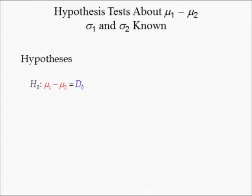The symbol D subscript 0, or D0, is the hypothesized difference between two population means.